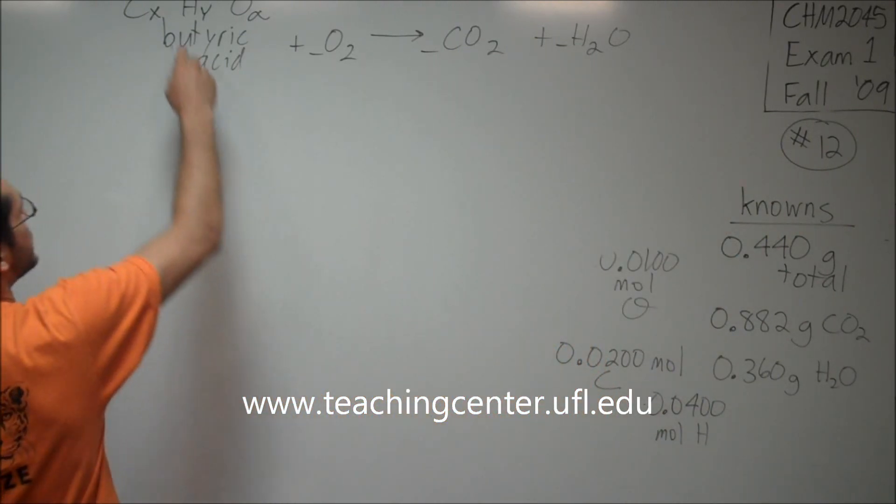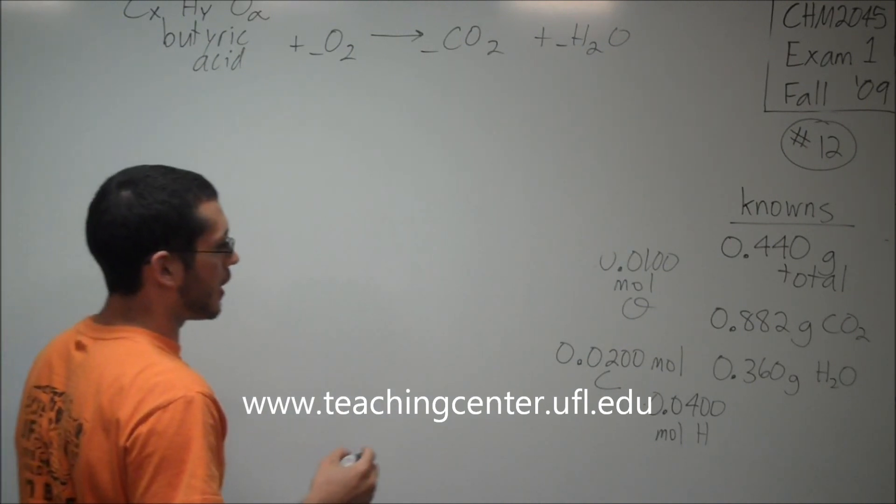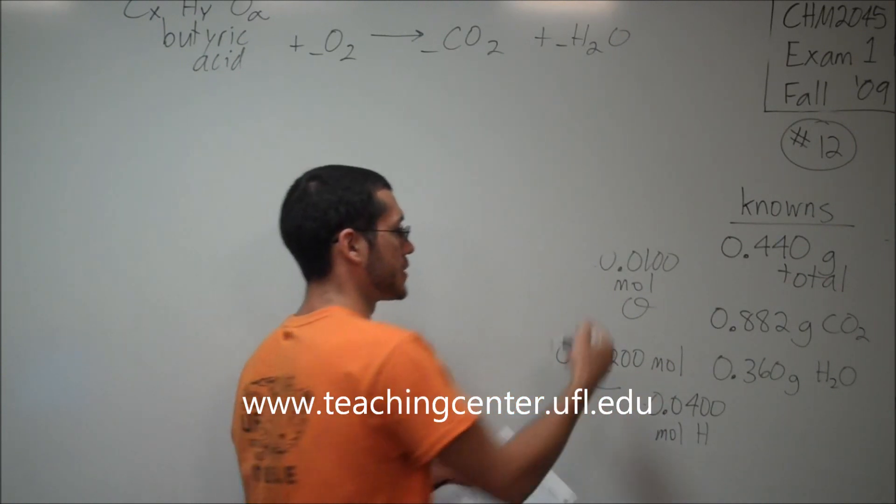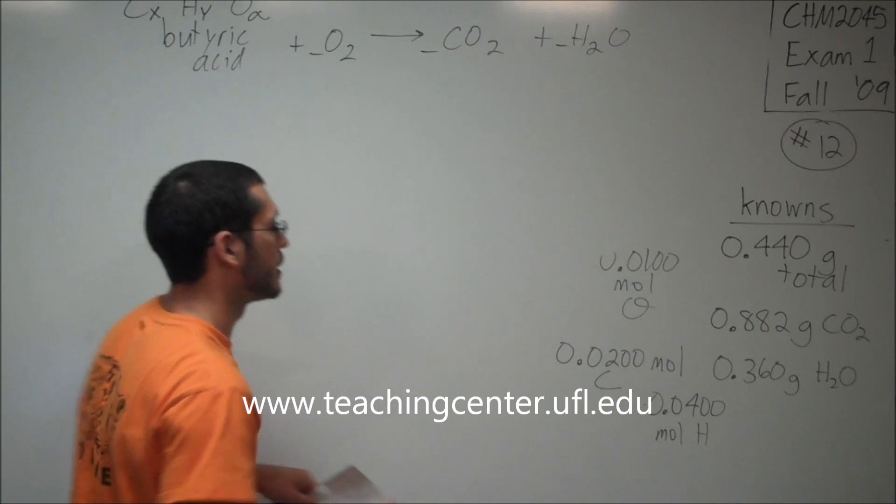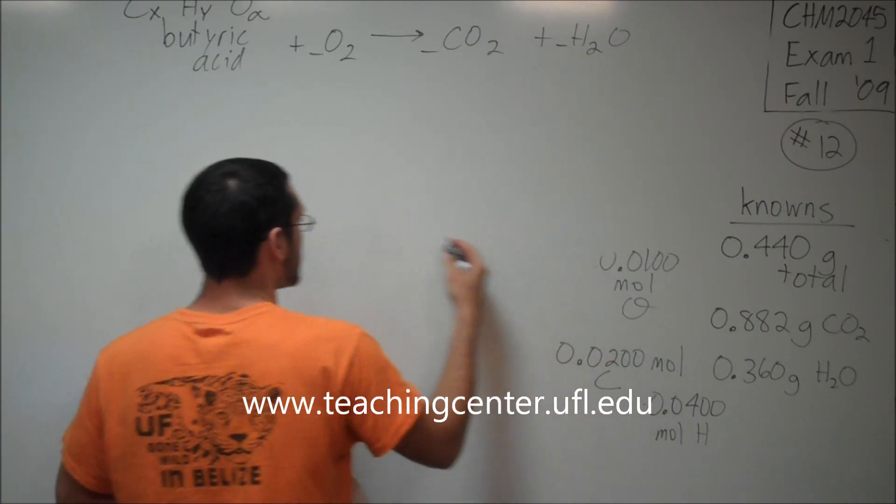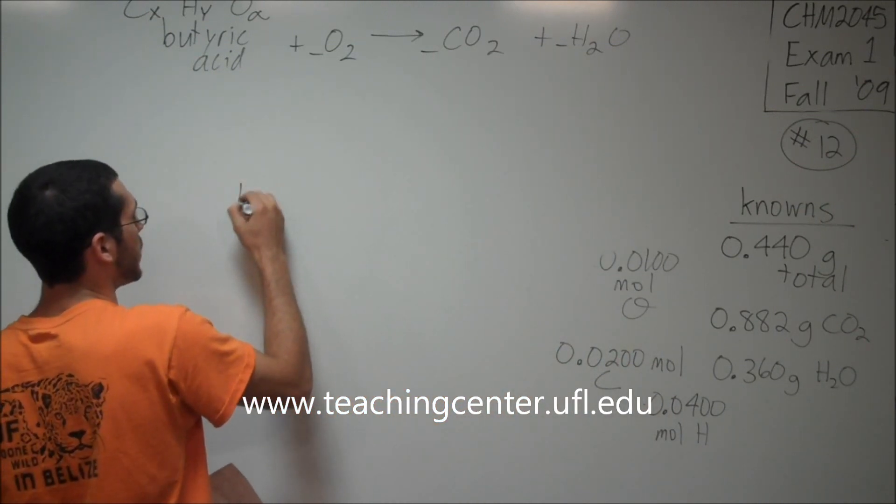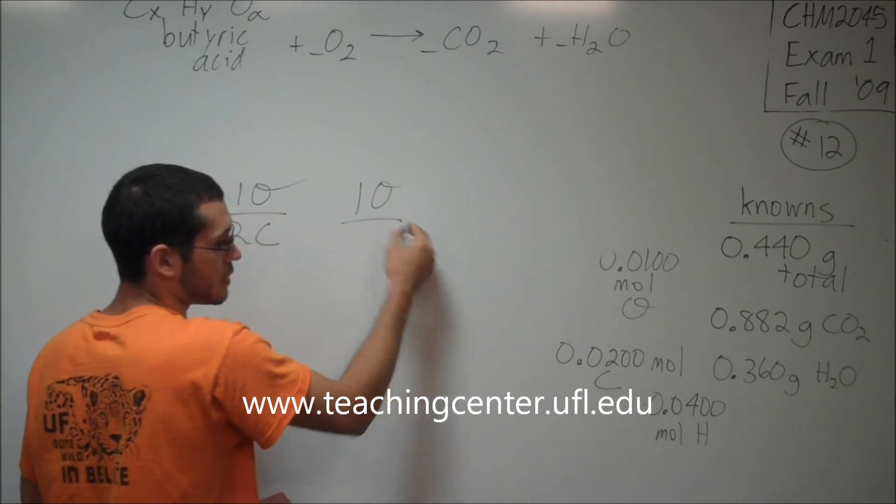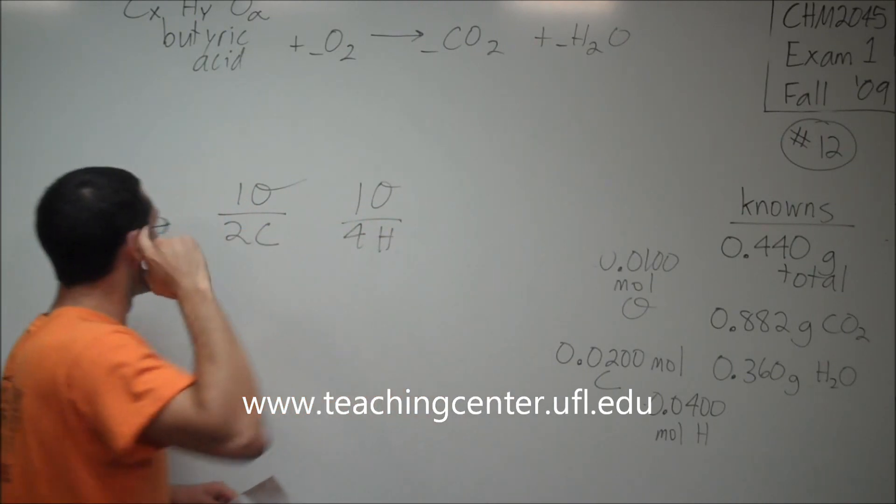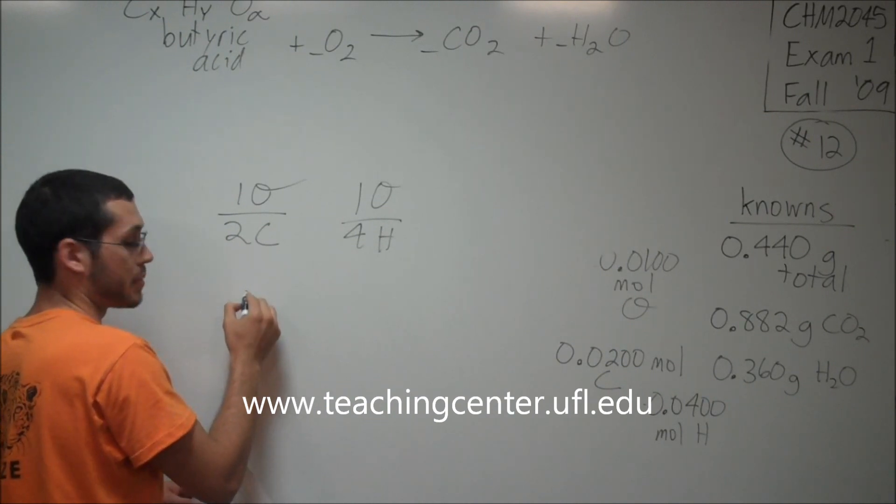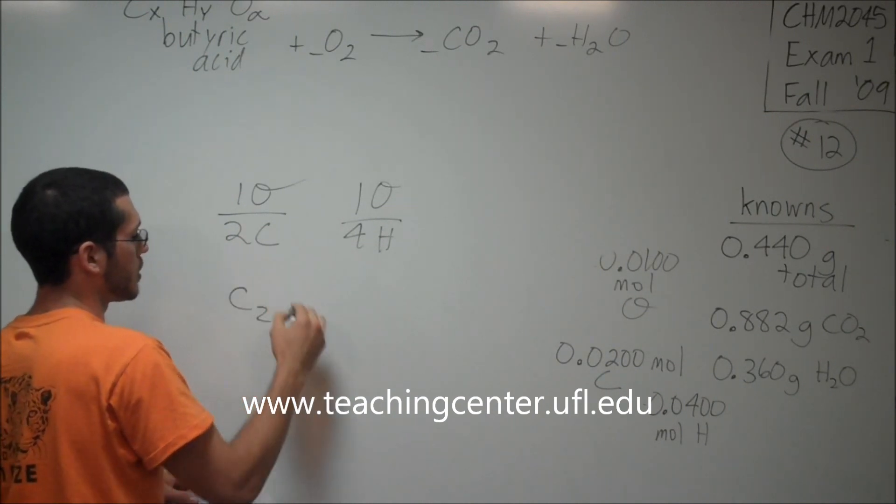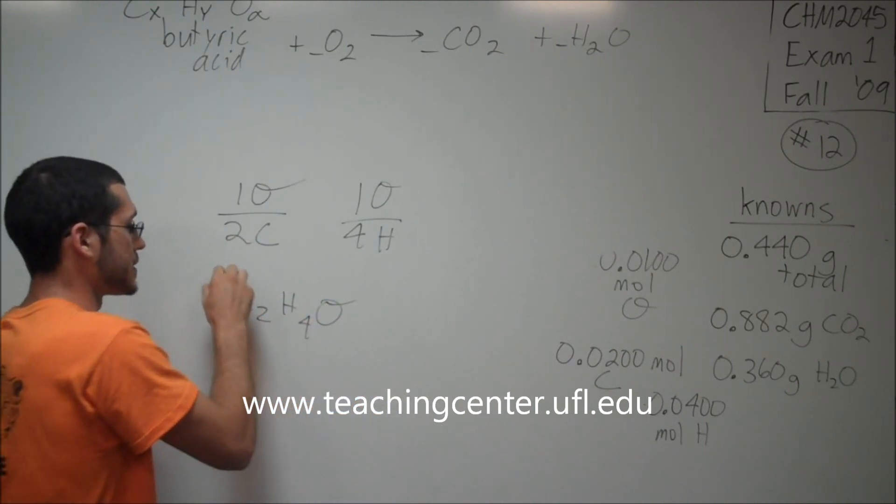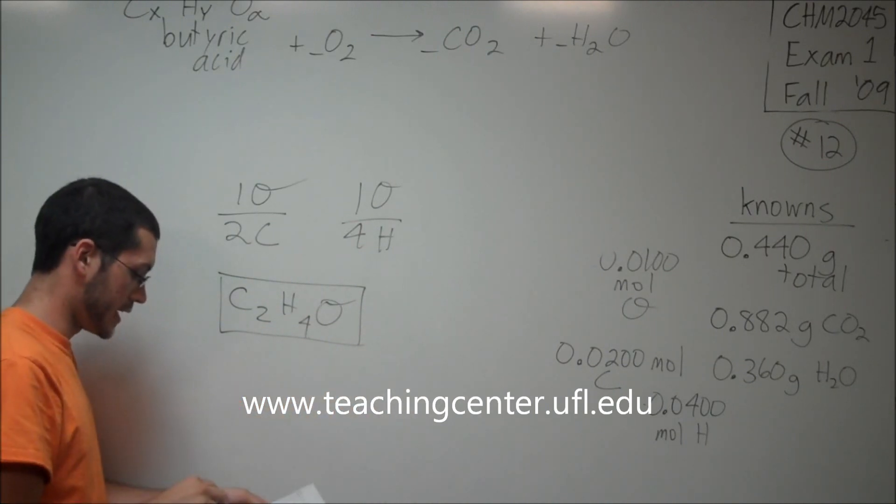Finally, in order to determine what x, y, and alpha are, I figure out what the mole to mole to mole ratio is. Your professors have probably taught you to just take the lowest mole divided into the biggest ones. We see that for every one oxygen, I have two carbons and for every one oxygen I have four hydrogens. Essentially, my empirical formula is C2H4O. This is the empirical formula for your tasty, tasty stuff.